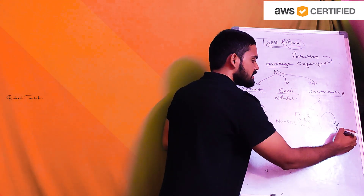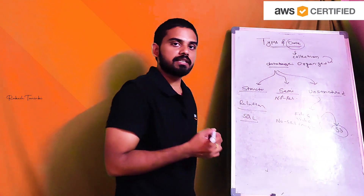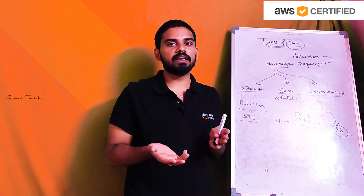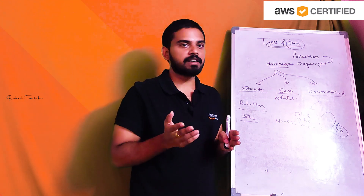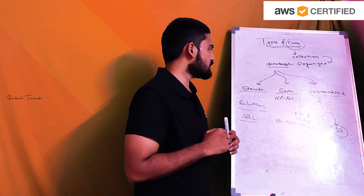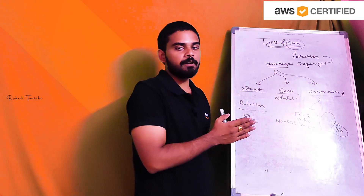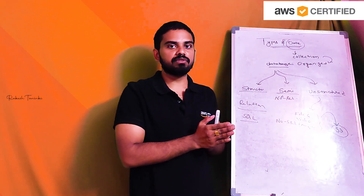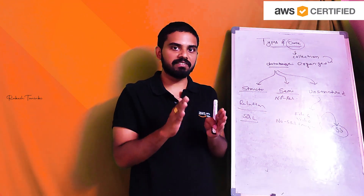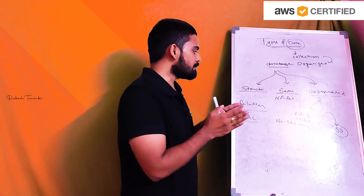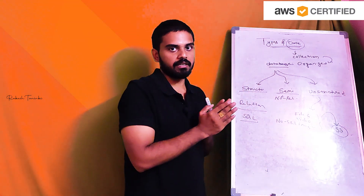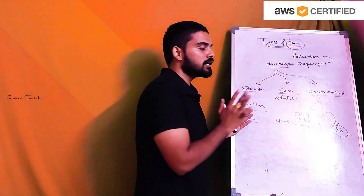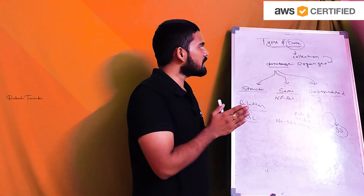Unstructured data includes examples like files, videos, and images. To store this type of data in AWS, we use S3. Based on the two primary types — structured data and semi-structured data — we have relational and non-relational databases respectively.